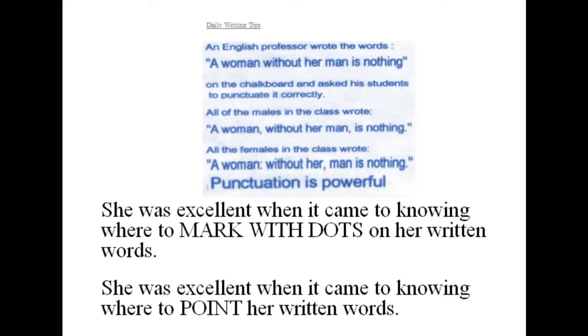Up above it says, an English professor wrote the words, a woman without her man is nothing, on the chalkboard and asked her students to punctuate it correctly. All of the males in the class wrote, a woman, comma, without her man, comma, is nothing, period. All the females in the class wrote, a woman, colon, without her, comma, man is nothing, period. Punctuation is powerful.